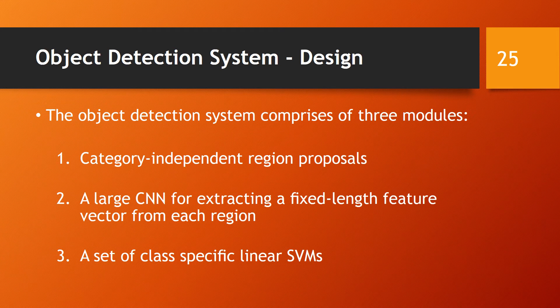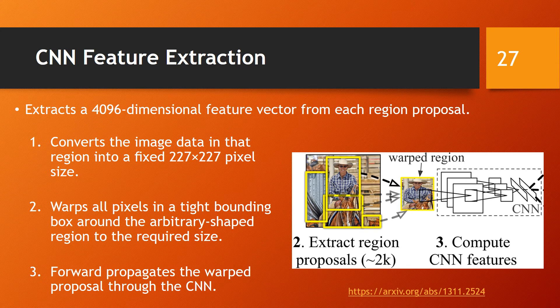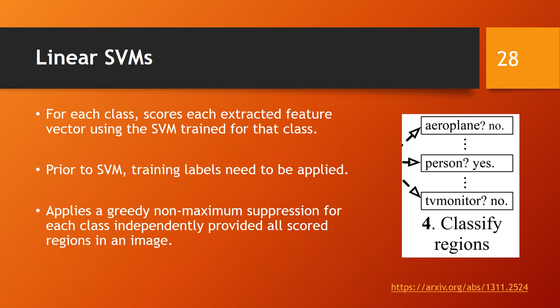Now I will give a description of the RCNN design. The RCNN is made up of three modules. The first is for generating category-independent region proposals for determining the set of candidate detections. The network uses the selective search method to generate the proposals. Each region proposal is then warped in the second module into a tight bounding box and forward propagated through a large CNN. This process extracts a fixed-length feature vector from each proposal. Lastly, in the third module, a set of class-specific linear SVMs are used to classify the extracted feature vectors.